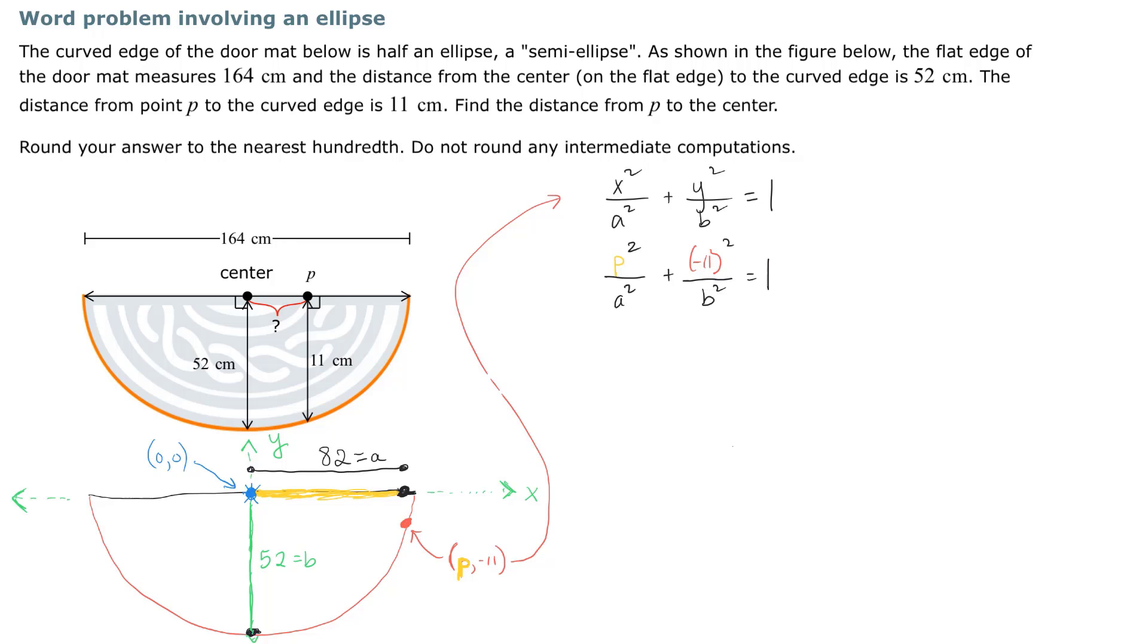And now we're going to go ahead and solve for P. Let's multiply both sides by the lowest common denominator to clear fractions. So I want to multiply by a² times b². Over here, I want to multiply by a² times b² as well.